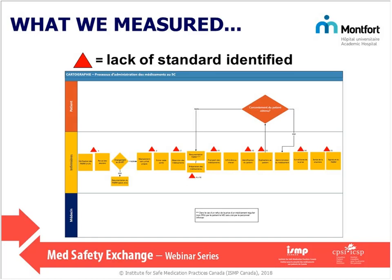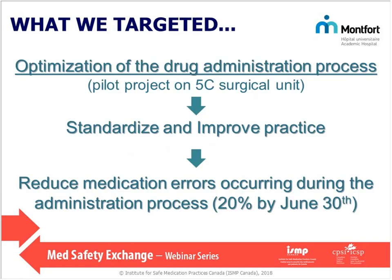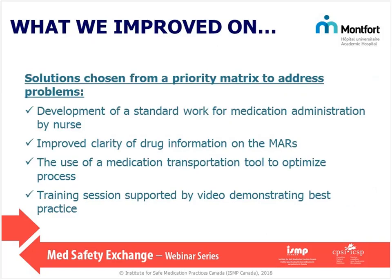It became clear that we needed to optimize the drug administration process to reach our ultimate goal of reducing medication errors by 20% by June 30th. We conducted a root cause analysis with a fishbone exercise, asking why errors occur and where they come from. Because we had a very enthusiastic team, we ended up with multiple solutions on the table. Being a lean project, we had to narrow down to the simplest and least expensive ones, using a priority matrix to arrive at the final solutions the team wanted to implement.